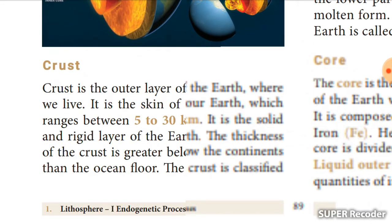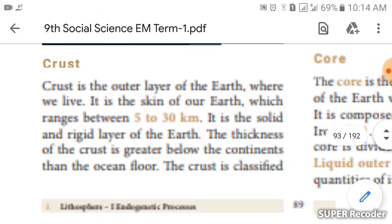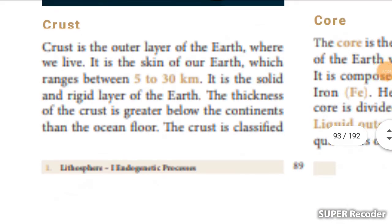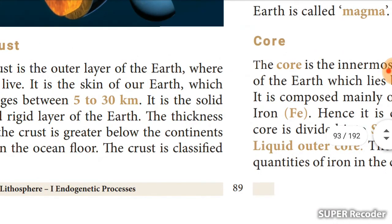The crust is the outer layer of the earth — the layer where we live. It is like the skin of our earth, which is soil. It ranges between 5 to 30 kilometers thick. It is the solid outer layer of the earth, and the thickness of the crust is greater below the continents than below the ocean floor.